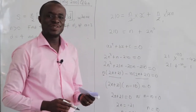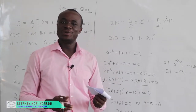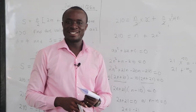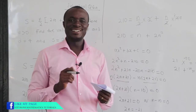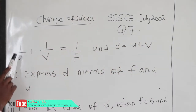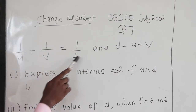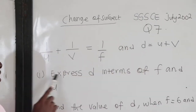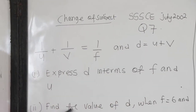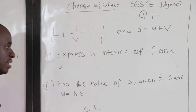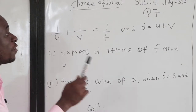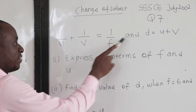Thanks for watching. Make sure you subscribe so any new video we upload, you'll be able to get it and prepare well for your final exams. Now, this is SSC July 22, question number 7. We have 1 over u plus 1 over v equals 1 over f, and d equals u plus v. We express d in terms of f and u, then find d when f is 6 and u is 6.5. There are four variables: u, v, f, and d.